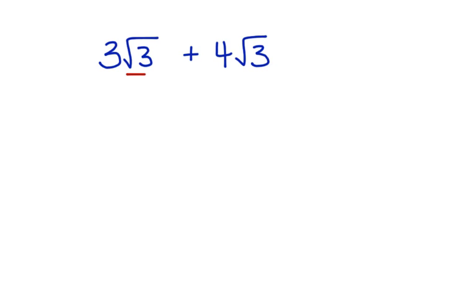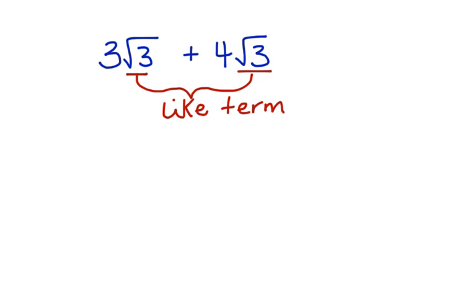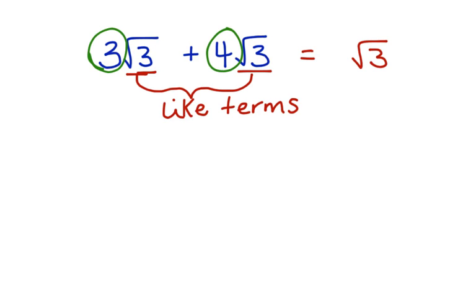The first thing to notice is the square roots of 3 are common — we can say that these are like terms. In order to add or subtract radical expressions, the terms have to be alike. So in this case, we have like terms, so we can bring the square root of 3 right over into our answer. Now we add the number parts: 3 plus 4 is 7, and our answer is 7 square roots of 3.